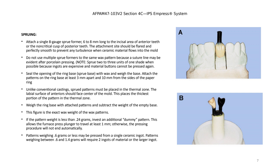Just as with porcelain fused to metal, where we weigh the wax patterns with the sprue and multiply by the metal density to determine how much metal is needed, the same idea applies to pressable ceramics to determine how many ingots are needed. We measure the wax pattern with the sprue before attaching to the ring. For the EMAX system, small ingots hold up to 0.7 grams of wax patterns, and larger ingots hold up to 1.4 grams.